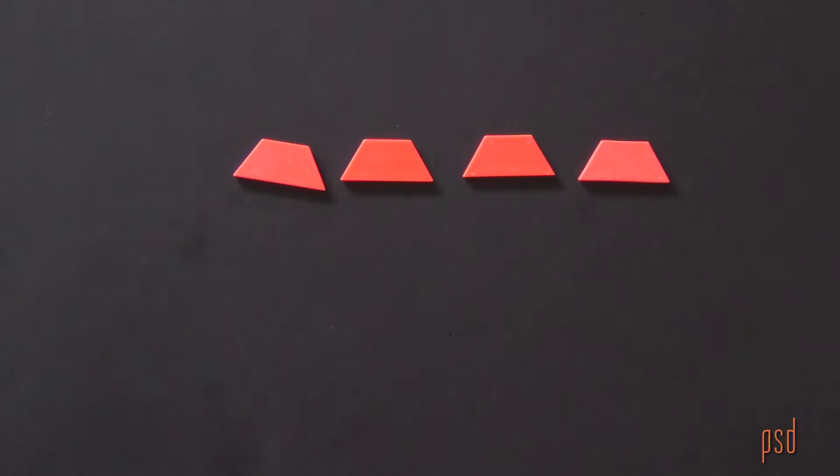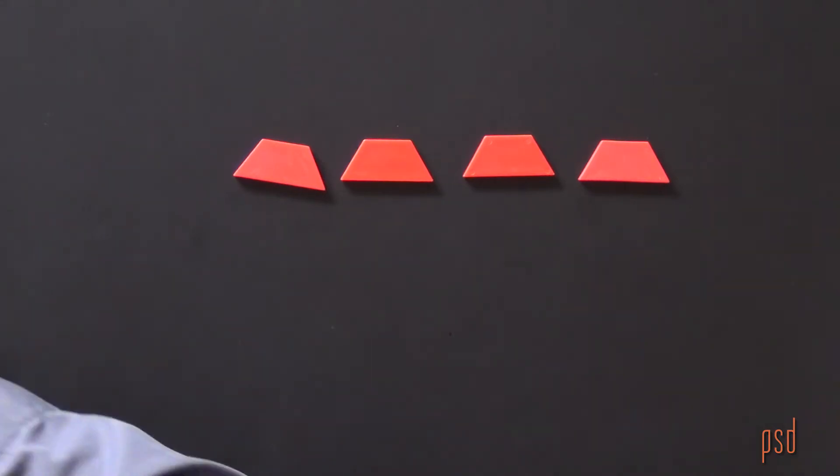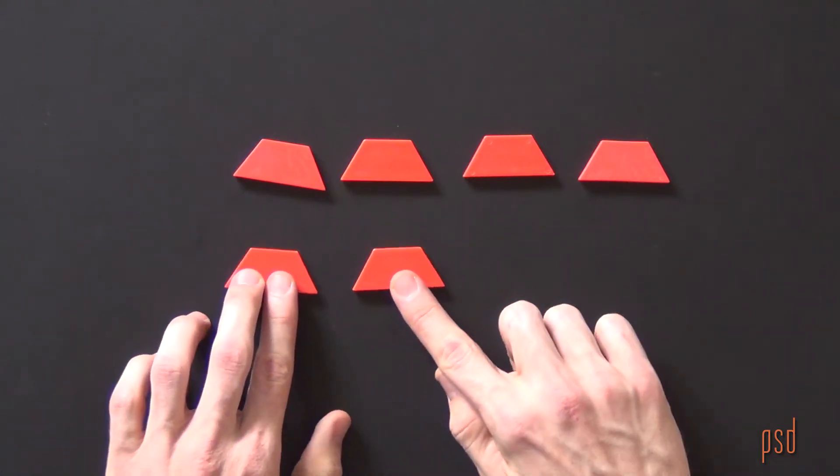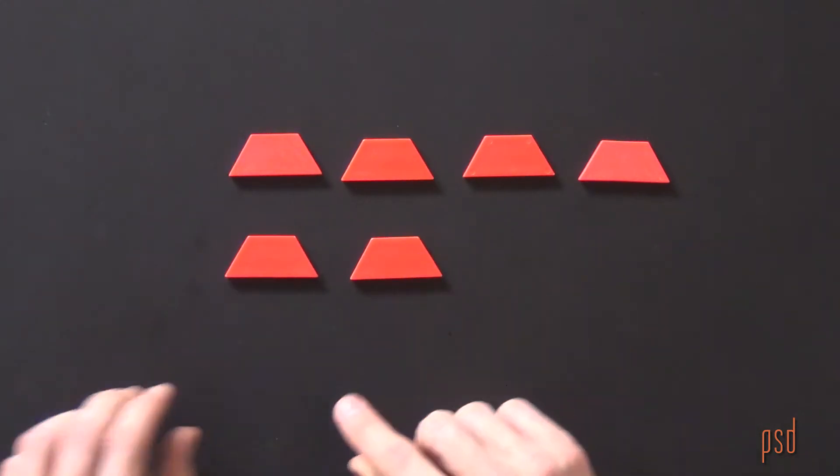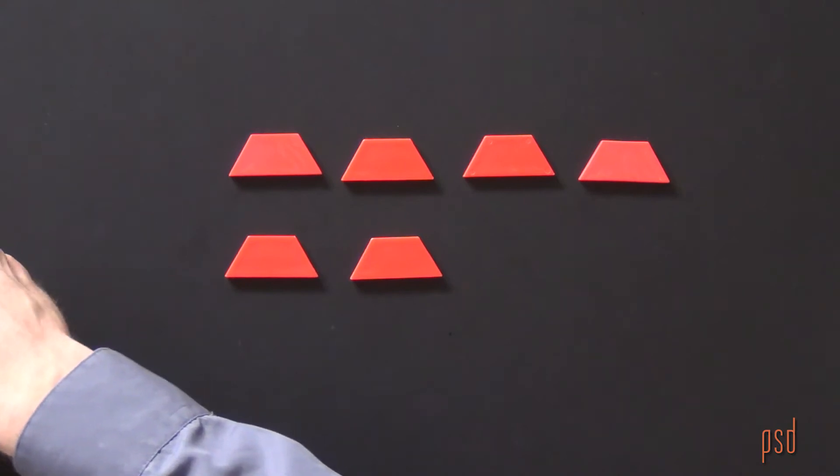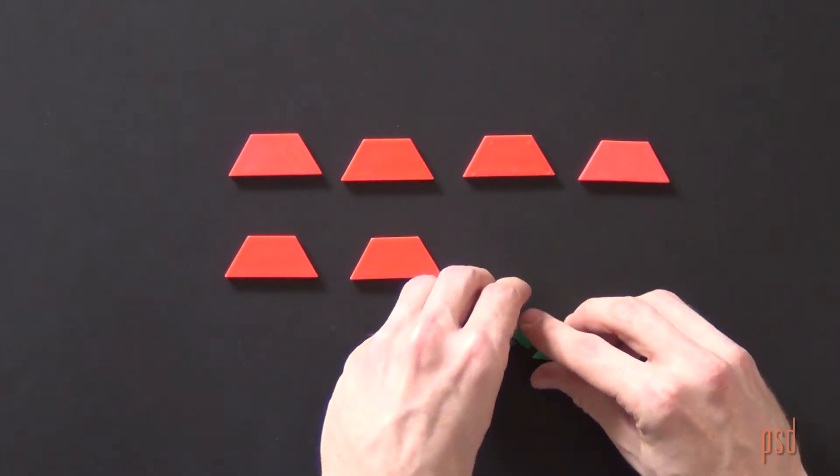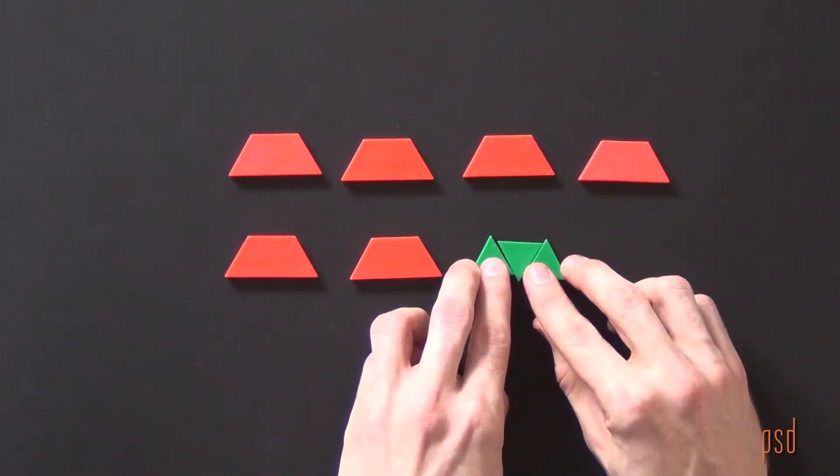I know that she purchased 2 and 2 thirds pounds of turkey. So I'll place out 2 more red trapezoids to represent the 2 pounds and then I will use the green triangles to represent thirds.